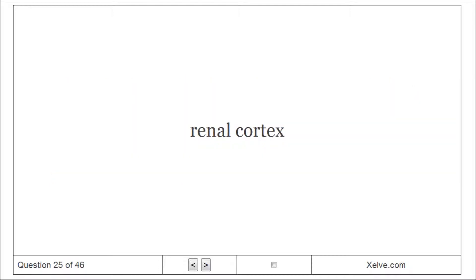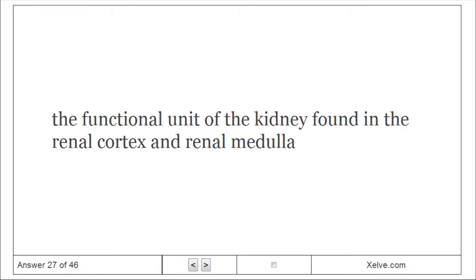Renal cortex: Outer part of the kidney. Renal medulla: Inner part of the kidney. Nephron: The functional unit of the kidney found in the renal cortex and renal medulla.